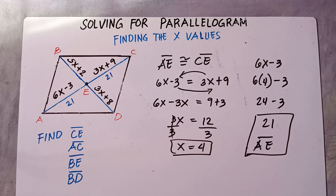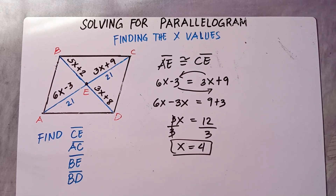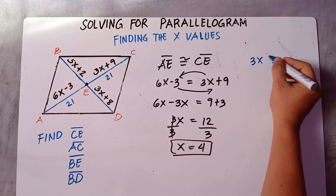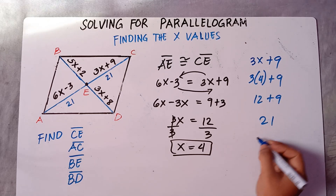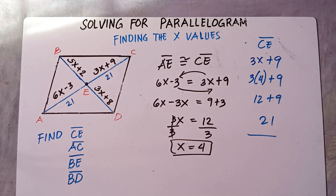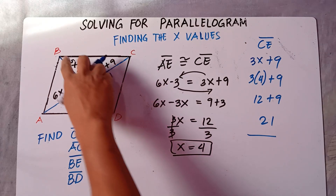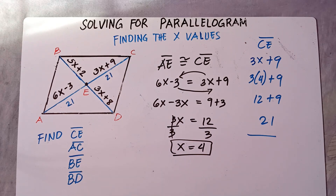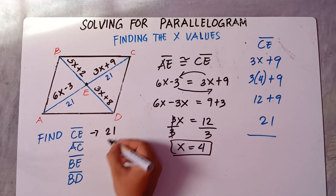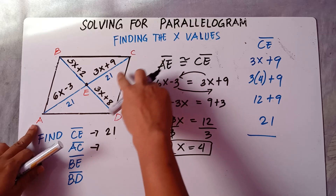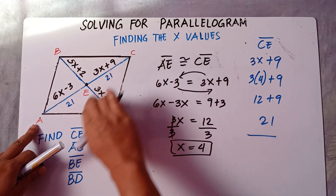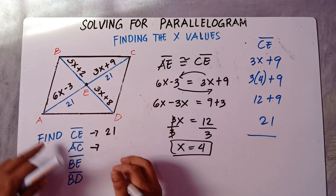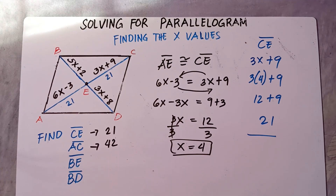Let's check: 3 times 4 plus 9 equals 12 plus 9, which is still 21. So line CE is 21. Now to find AC, we add AE and CE: 21 plus 21 equals 42. So AC is 42.